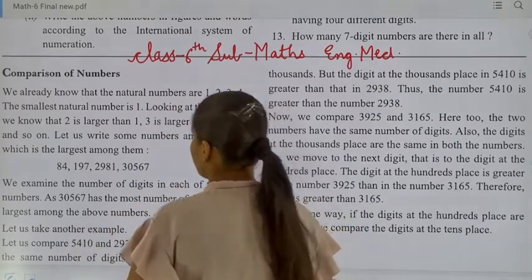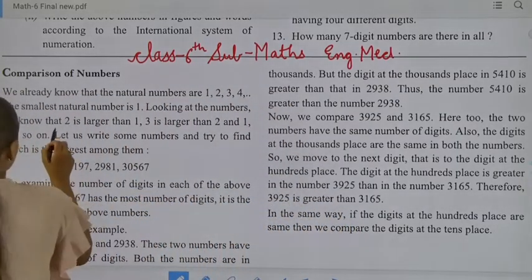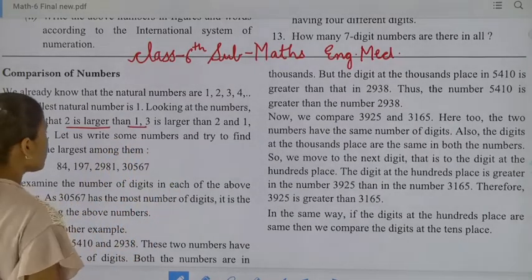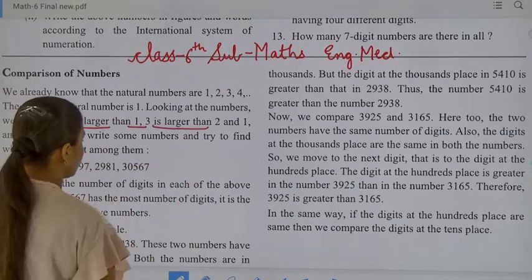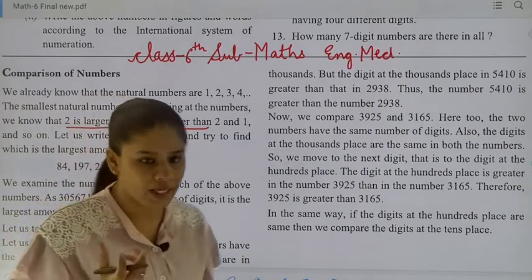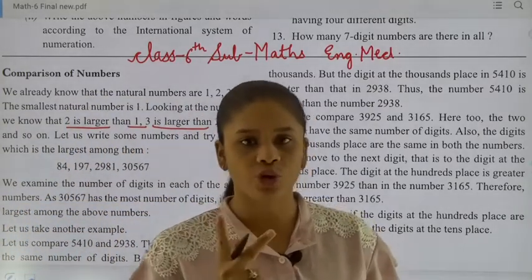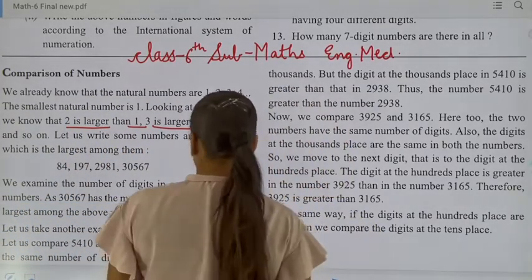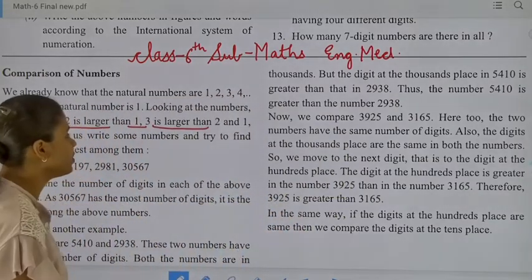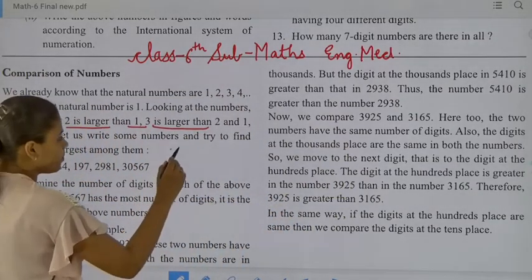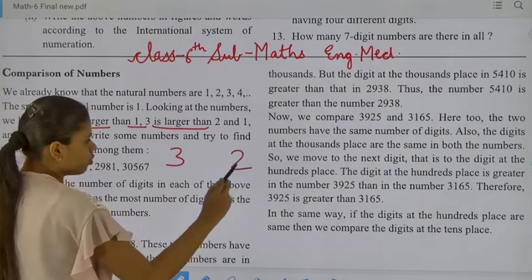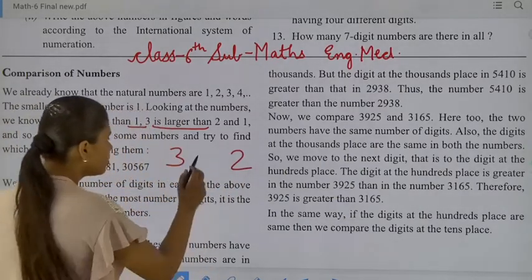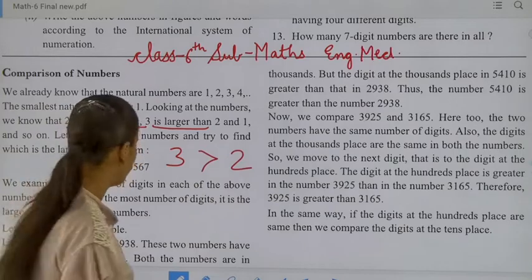Looking at the numbers, we know that 2 is larger than 1, and 3 is larger than 2. Students, what is the meaning of comparison? You are given two numbers and you have to compare them — which one is greater and which one is less? For example, this is 3 and this is 2. You have to tell which one is the greater number. 3 is the greater number. Understood?